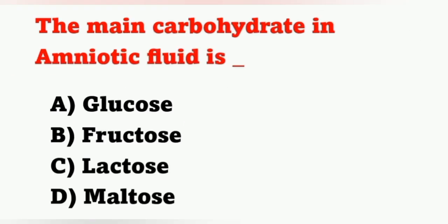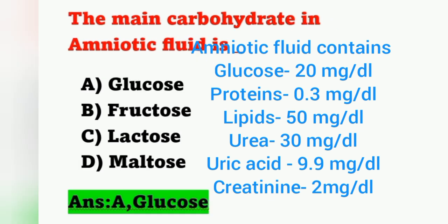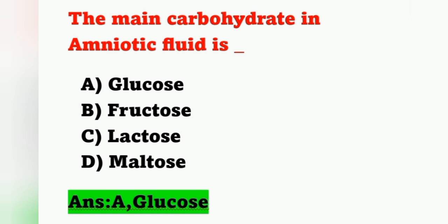The next question: the main carbohydrate in amniotic fluid. Options — A: glucose, B: fructose, C: lactose, D: maltose. Amniotic fluid contains glucose at 20 mg/dL, proteins 0.3 mg/dL, lipids 50 mg/dL, urea 30 mg/dL, uric acid 9.9 mg/dL, and creatinine 2 mg/dL. The carbohydrate content is glucose — option A is the correct answer.